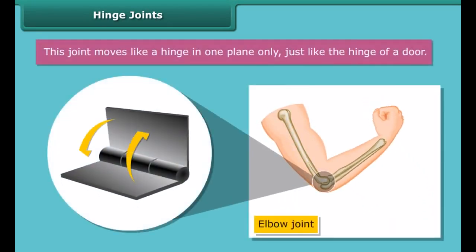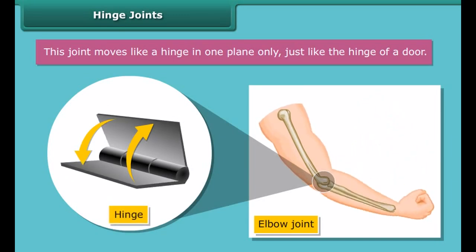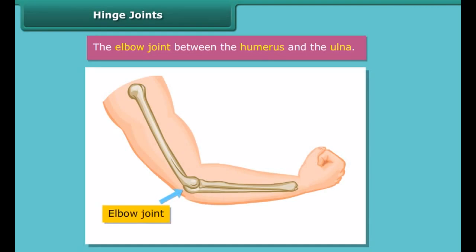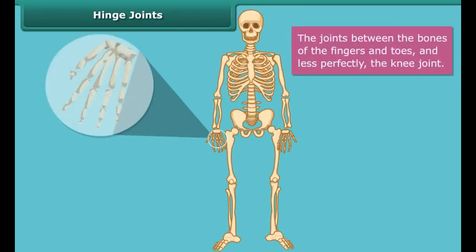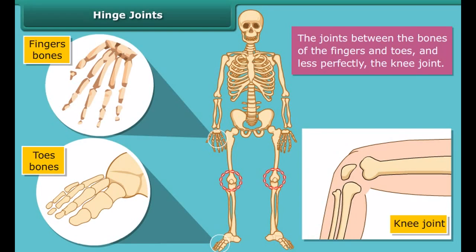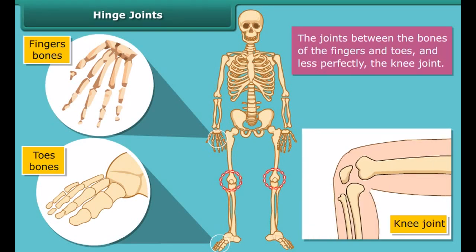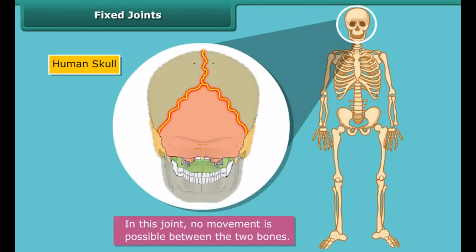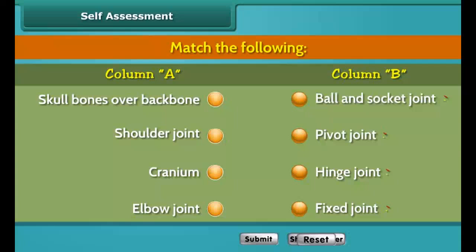Hinge joints move like a hinge, in one plane only, just like the hinge of a door. The elbow joint between the humerus and the ulna, the joints between the bones of the fingers and toes, and the knee joint are examples of hinge joints. Hinge joints usually give sufficient power because there is less danger of twisting. In a fixed joint, no movement is possible between the two bones. The sutures between the bones of the skull are an example of a fixed joint.